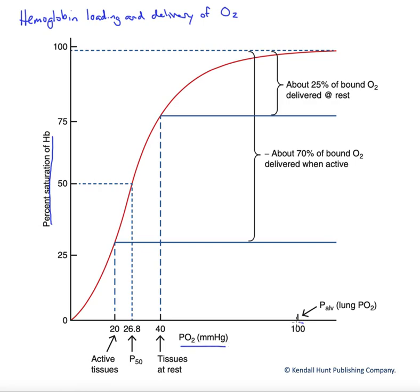Now, at a partial pressure of oxygen of about 100, that's approximately the alveolar PO2. If we go vertically from here, we find that we are essentially 100% saturated with oxygen, meaning every hemoglobin has, on average, four out of four sites bound to oxygen. This is ideal.